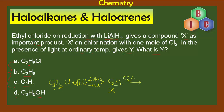Now X (ethane) undergoes chlorination with one mole of Cl₂ in the presence of light — a mono halogenation reaction — forming C₂H₅Cl along with HCl. So the product Y is the same as our starting reactant, ethyl chloride.